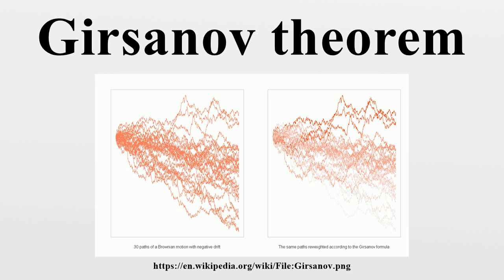Let X be a measurable process adapted to the natural filtration of the Wiener process. Define the Doléans exponential of X with respect to W. If Z is a strictly positive martingale, a probability measure Q can be defined on such that we have the Radon-Nikodym derivative. Then for each T, the measure Q restricted to the un-augmented sigma-field is equivalent to P restricted to it.